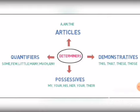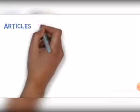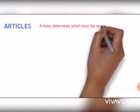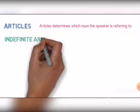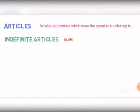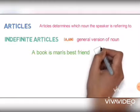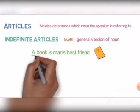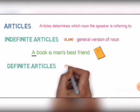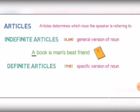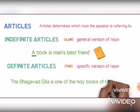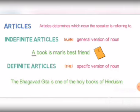Now let's have two examples of each type to make you clear about them. First one is article. Article determines which noun the speaker is referring to. A and an are indefinite articles and are used when you are talking about a general version of the noun. For example, 'a book is man's best friend.' Here we are referring to all categories of book, not any specific one, so 'a' is used. 'The' is the definite article and is used when you are talking about a specific version of the noun. 'The Bhagavad Gita is one of the holy books of Hinduism.' Here we are referring to a specific book, which is the Bhagavad Gita. So this is how articles are used as determiners.